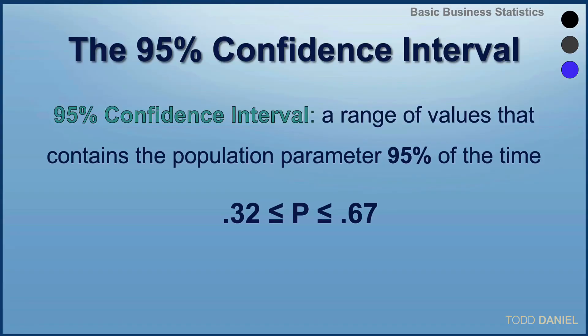A 95% confidence interval is a range of values that contains the population parameter 95% of the time. As with a confidence interval around means, the confidence interval around a proportion is the population proportion plus or minus a margin of error.